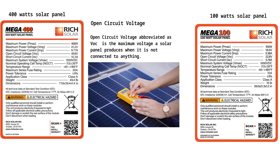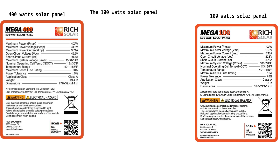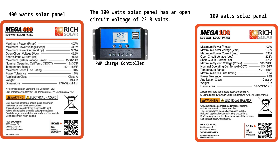If the charge controller has a maximum voltage limit of 50 volts, the open-circuit voltage from the connected solar panels should not exceed 50 volts. From the solar technical specification data, the 100-watt solar panel has an open-circuit voltage of 22.8 volts. To save cost, a PWM charge controller can be used to still have good performance, but the maximum voltage of the PWM should not be below 30 volts. A 50-volt max, 30-amp max PWM charge controller can be used.